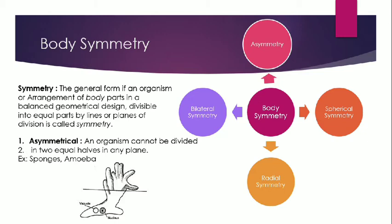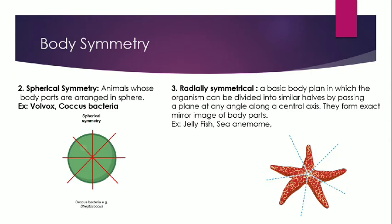The next parameter is body symmetry. Symmetry is a balanced geometrical design divisible into equal parts by lines or planes of division. It is further classified into four types: asymmetry, bilateral symmetry, spherical symmetry, and radial symmetry. Asymmetrical means that when cutting an organism, it cannot be divided into equal halves from any plane — generally found in sponges and amoeba. Spherical symmetry is found in animals that are spherical in shape — if cut in any plane they divide into equal halves — for example, Volvox and coccus bacteria.